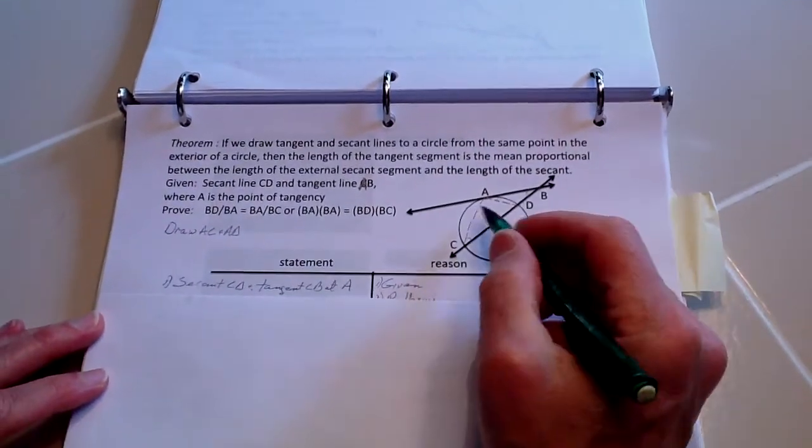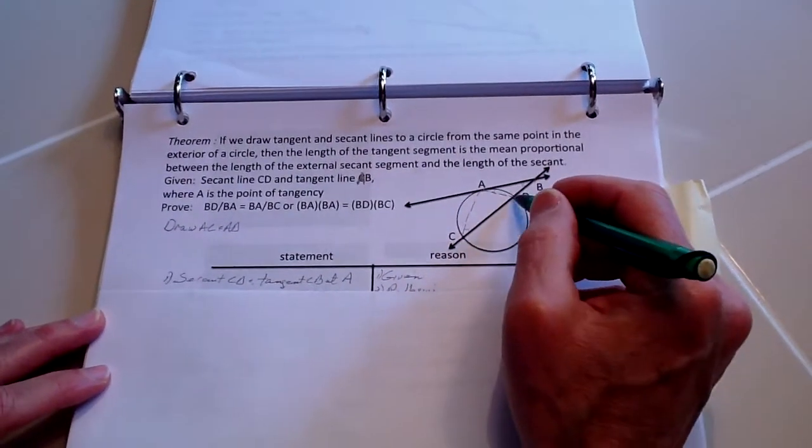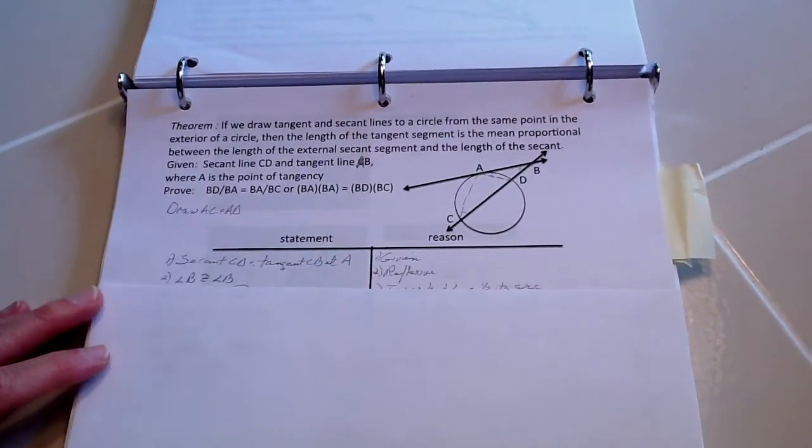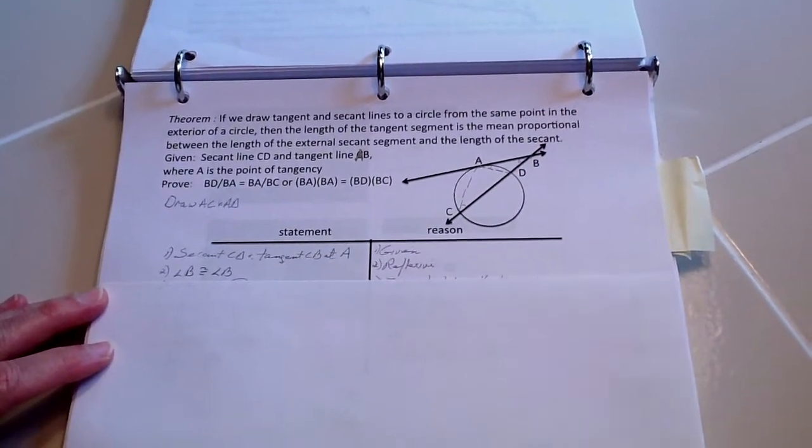First thing is I draw a line here, AC and AD. And I have the given, and we know that angle B is congruent to angle B because they're reflexive.